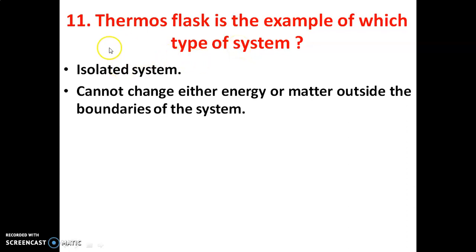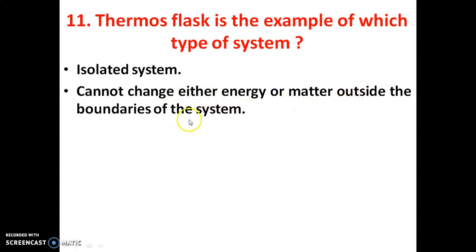A thermos flask is an example of which type of system? It is an isolated system — a system that cannot exchange either energy or matter outside the boundaries of the system.